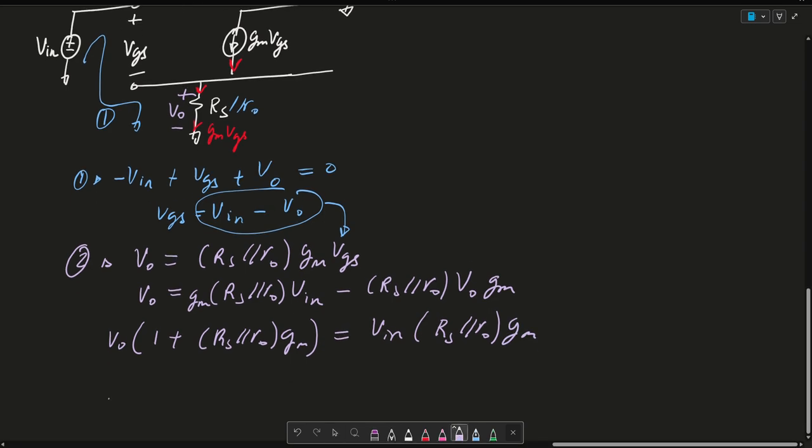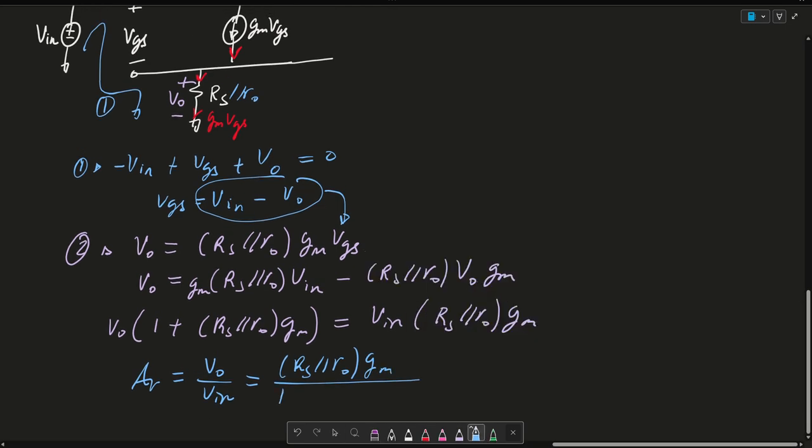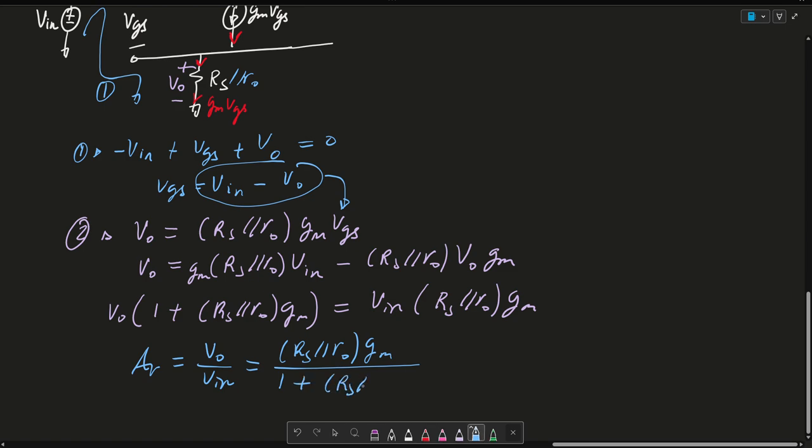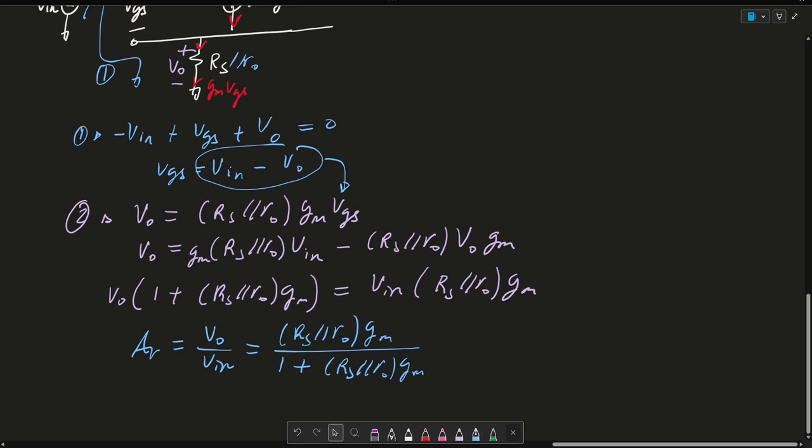We can go ahead now and solve for AV. So then AV equals Vout over Vin, which equals RS||RO·Gm over (1 + RS||RO·Gm). And again, you can notice that this one is negligible. So then the numerator cancels out with the denominator. So then this is approximately one.